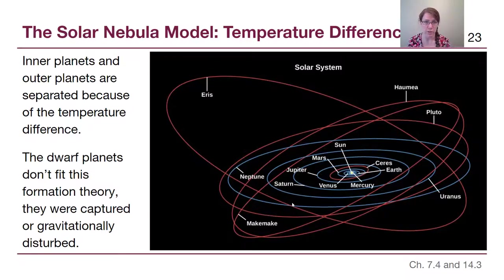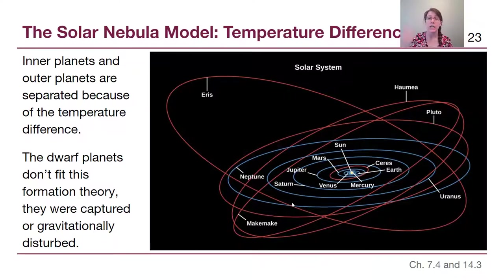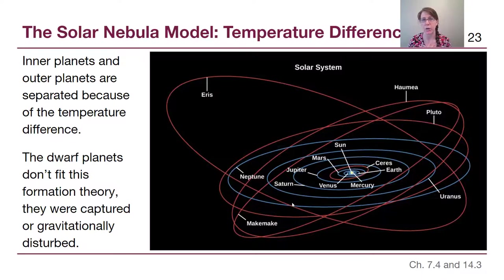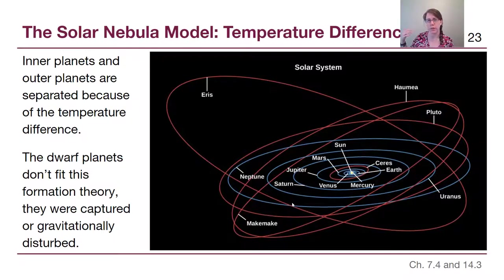The reason inner and outer planets look so different is entirely because of that temperature difference — by having more building material, outer planets became larger and could sweep up hydrogen gas easily. Dwarf planets are small icy objects, all smaller than Earth's own moon, located so far from the sun that material density was too low to accumulate many building blocks, whether rock or ice.